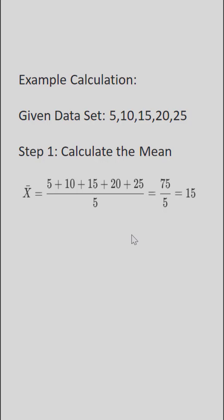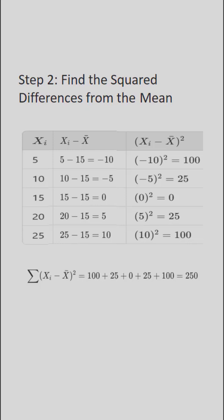To calculate variance, step one is to calculate the mean. To calculate the mean, take the sum of the values divided by the count. The sum of the values is 75, divided by 5, gives us 15. So the mean of the data set is 15.